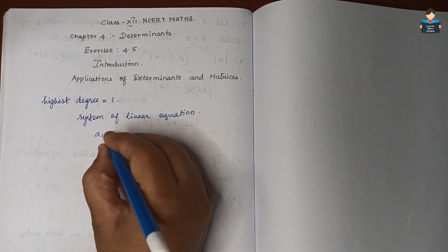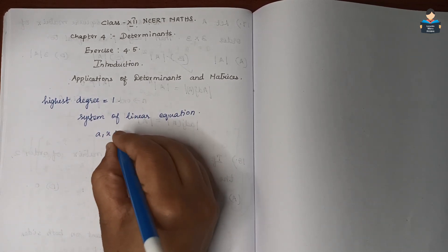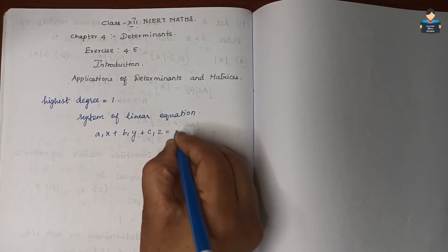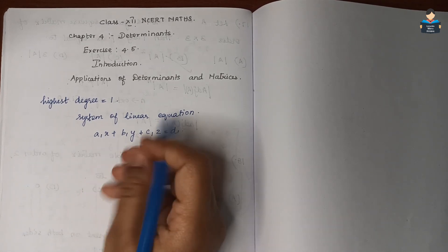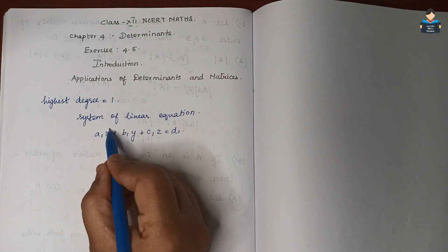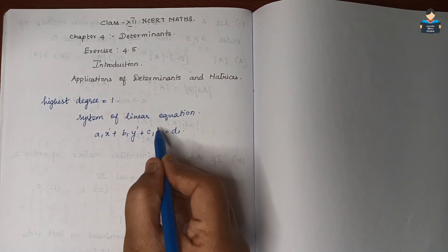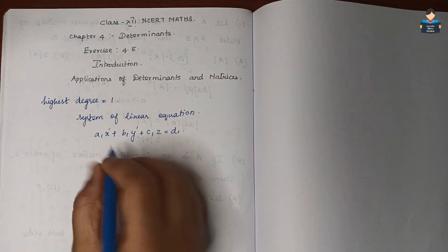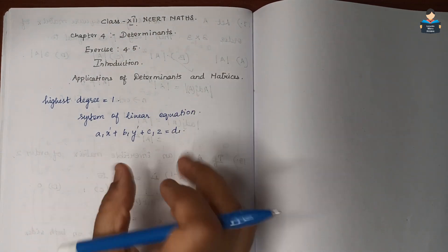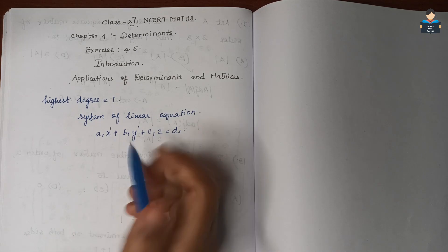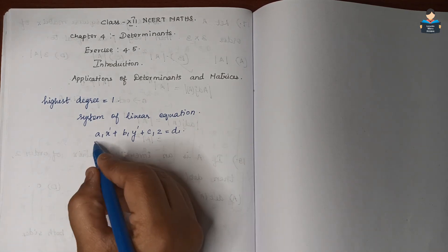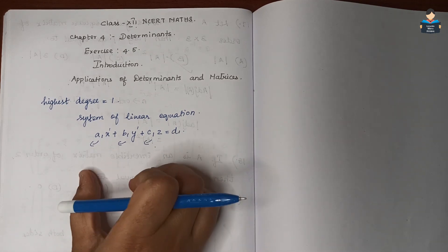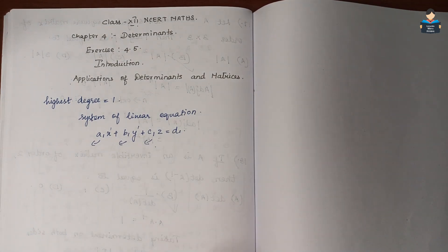A system of linear equations looks like: a1x + b1y + c1z = d1. Here it is a linear equation and the highest degree of the variable is 1. We use three variables x, y, z and a1, b1, c1 are the coefficients.